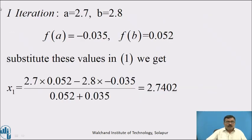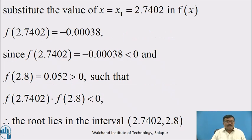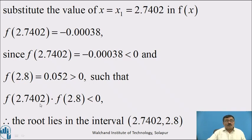First iteration: a = 2.7, b = 2.8, f(a) = −0.035, f(b) = 0.052. Substituting in equation 1 and simplifying, we get x₁ = 2.7402. Substituting x = 2.7402 in f(x), f(2.7402) = −0.00038, which is less than 0, and f(2.8) = 0.052, which is greater than 0. Since f(2.7402)·f(2.8) < 0, the root lies in the interval (2.7402, 2.8).